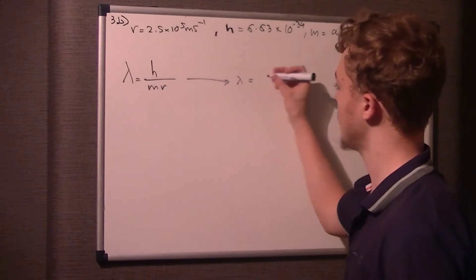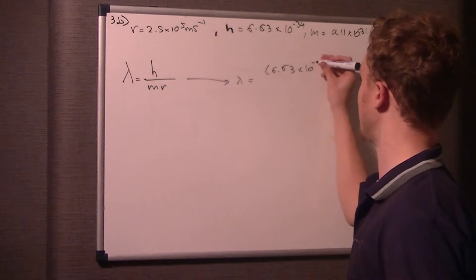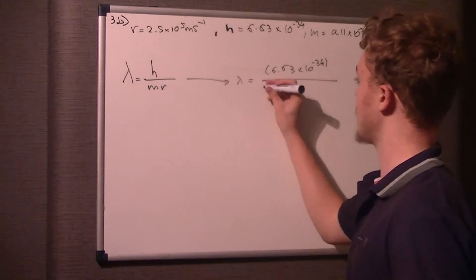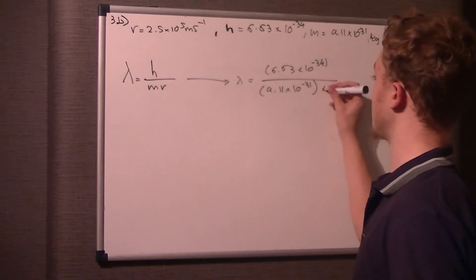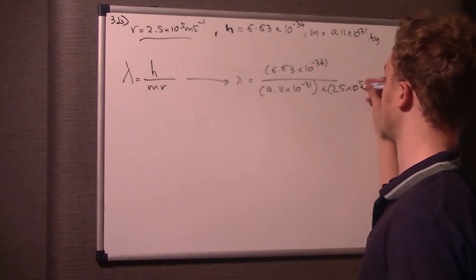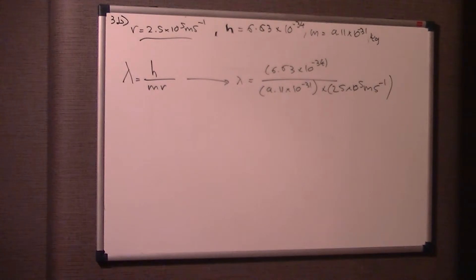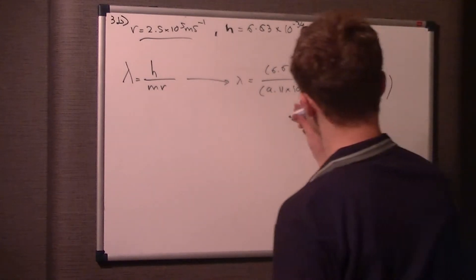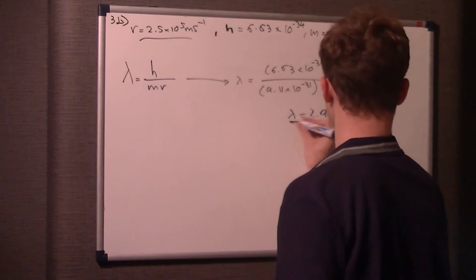This allows us to calculate the wavelength lambda in meters: 6.63 times 10 to the minus 34 over 9.11 times 10 to the minus 31 times 2.5 times 10 to the 5 meters per second. Put that in your calculator and you should get 2.9 times 10 to the minus 9 meters.